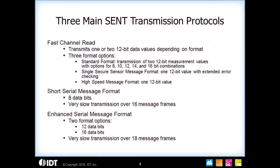There are two ways to transmit data on SENT. One is using fast channels to bring out the primary sensor information, like pressure or throttle position. But there's also, in the background, a slow channel message that can be transmitted, allowing you to bring out things like diagnostics. On the fast channel, there are three formats: the standard format, single secure message, and high speed message format.